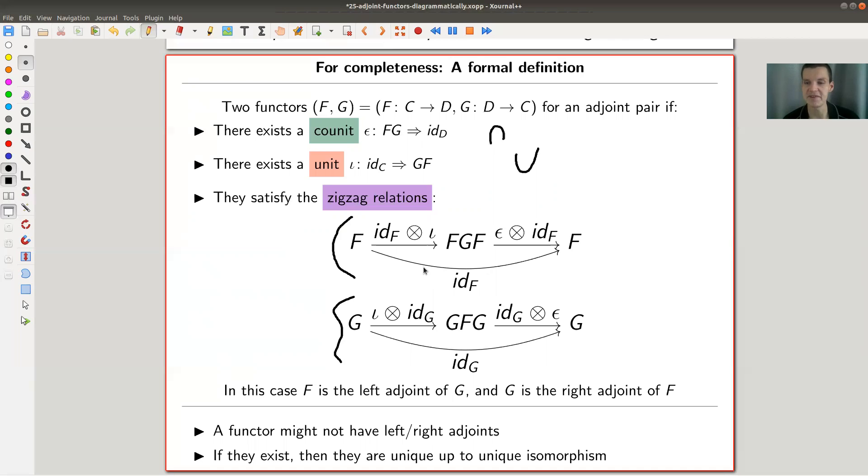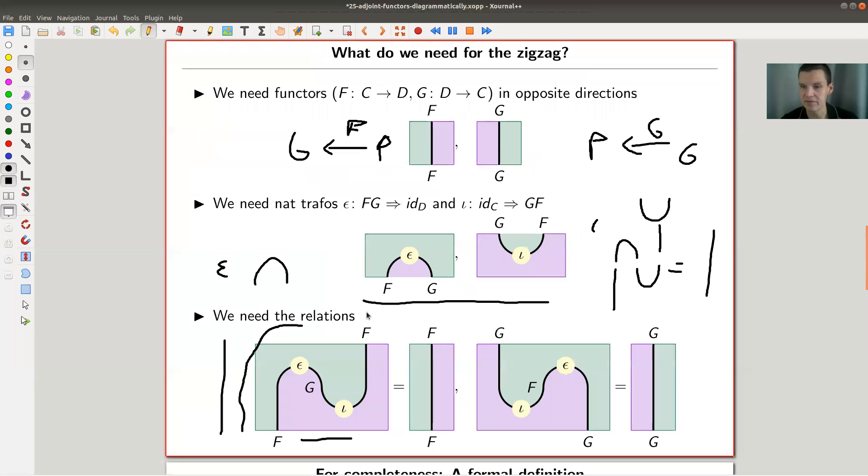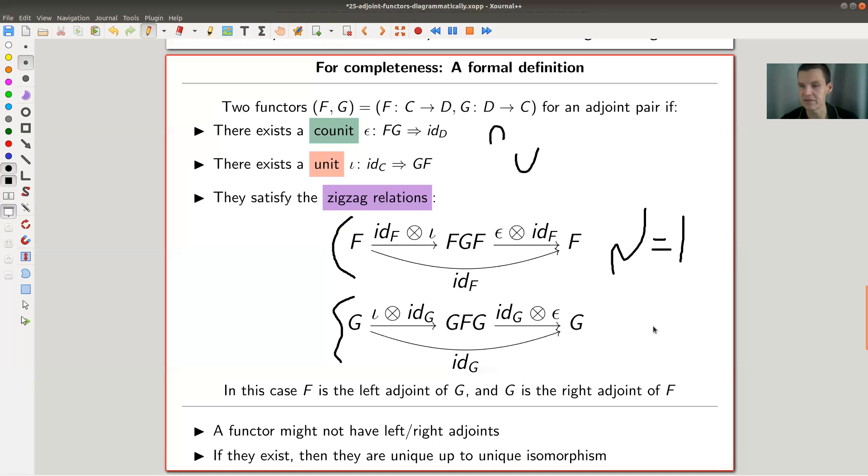The other one is just the opposite picture. So the zigzag identity equals this one, and of course there's another zigzag relation in exactly the opposite way. I'm not quite sure which one is which, but one of them is one of them.